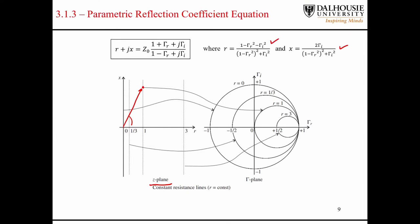The vertical lines corresponding to the real part of the impedance get mapped to circles. That's why these circles are called circles of constant resistance — along each circle, the resistance is constant. For example, on this circle here, resistance equals 3; that's the constant resistance circle.